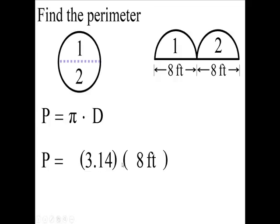And now if I take 3.14 times eight, I'll have my perimeter, it's going to be 25.12 feet. Now that's the circumference of this circle. It's the perimeter only of the circle, not of this figure, but of this circle.